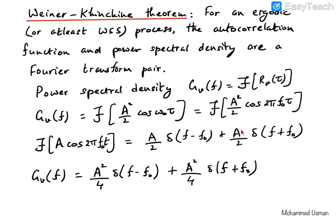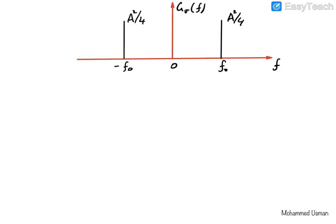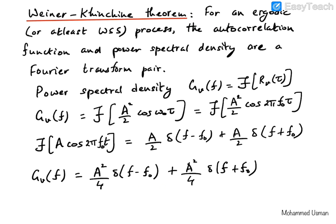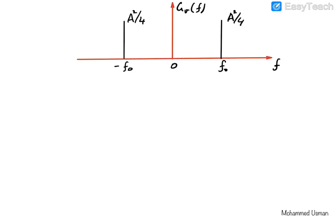The proof of computing the Fourier transform of a sinusoidal function is available in a separate video on the channel. The focus here is to explore the properties of the power spectral density and verify them using the power spectral density of the randomly phased sinusoid. We have plotted the PSD as impulses at ±f₀ with amplitudes A²/4, exactly as shown in the expression and graph.